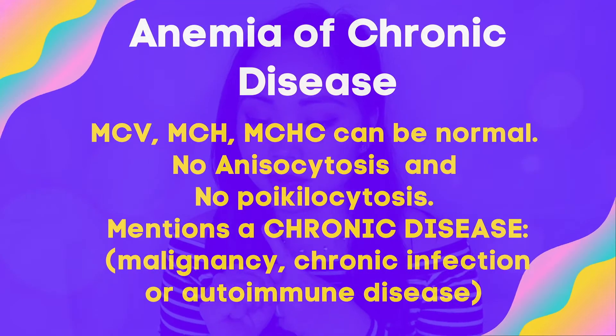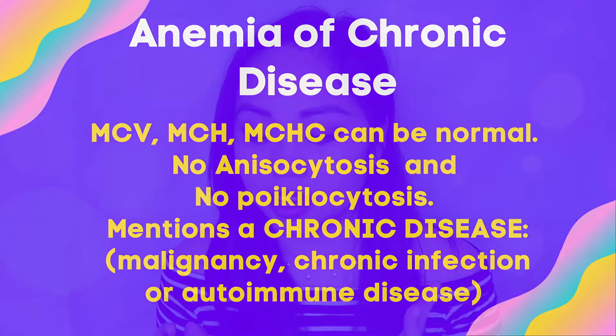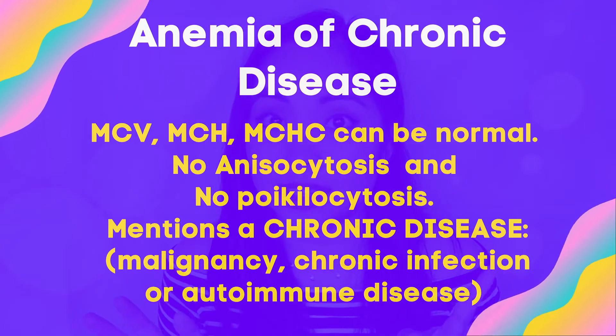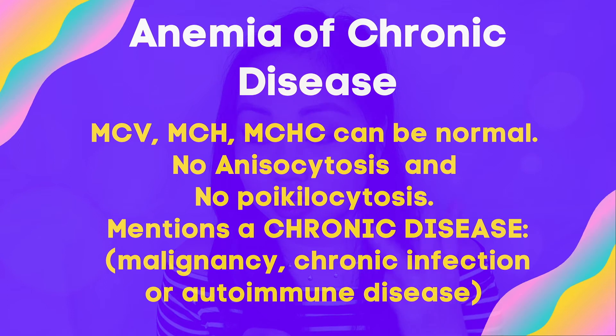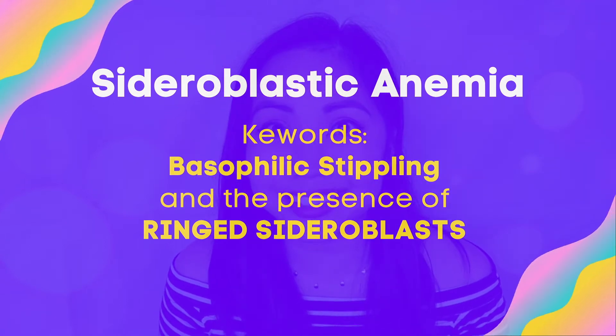For anemia of chronic disease, they're probably going to mention a chronic disease, and aside from that, the MCV and MCHC are kind of normal to decreased. If there's no anisocytosis and no poikilocytosis, it's probably anemia of chronic disease. The third one is sideroblastic anemia, and your keywords for that are basophilic stippling and the presence of ringed sideroblasts — that's very clear. Ringed sideroblasts equals sideroblastic anemia.